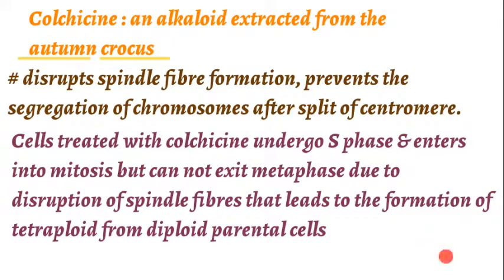Colchicine is an alkaloid extracted from the plant autumn crocus. It disrupts spindle fiber formation, and after disruption of spindle fibers, segregation of chromosomes is prevented. Cells treated with colchicine undergo the synthesis phase and enter mitosis, but cannot exit through metaphase due to disruption of spindle fibers.